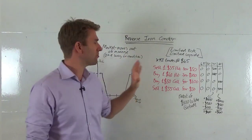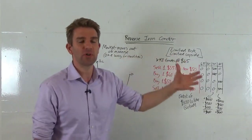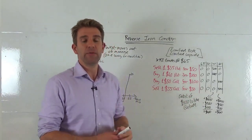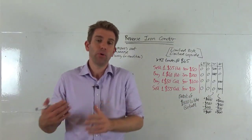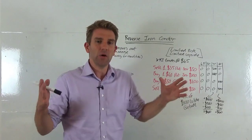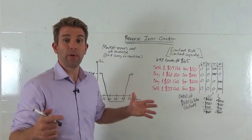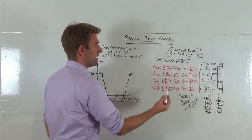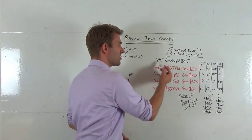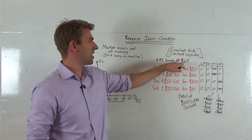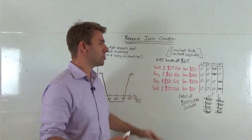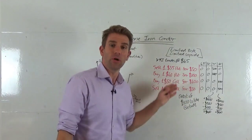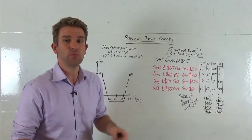Let's say we think the market's going to move out of a range one way or another, but we're not sure which way. If we thought there was going to be massive upside we'd just buy a call option. If we thought massive downside, we'd buy a put option. Since we think it's going to be one or the other, we buy a call and a put. The stock is currently trading at $45, and we think at expiry it's going to be either below $40 or above $50.